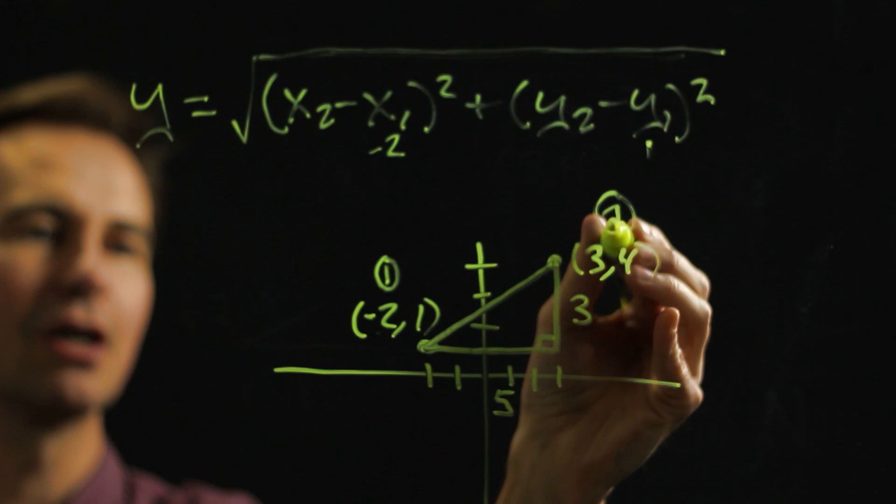This three would be our x2, so we'd stick a three there. And that four would be our y2, so we'd stick a four there.